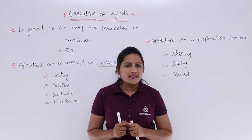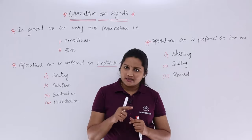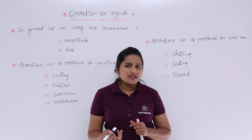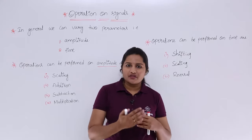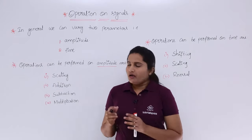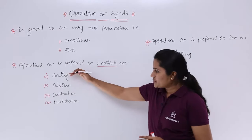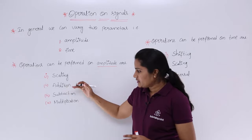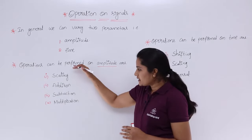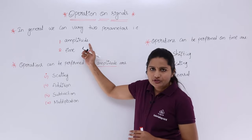If you want to do any operation on a continuous time signal, you need to perform it on either amplitude or on time. The amplitude-related operations are amplitude scaling, amplitude addition, amplitude subtraction, and amplitude multiplication. These are the operations related to the parameter amplitude of a signal.